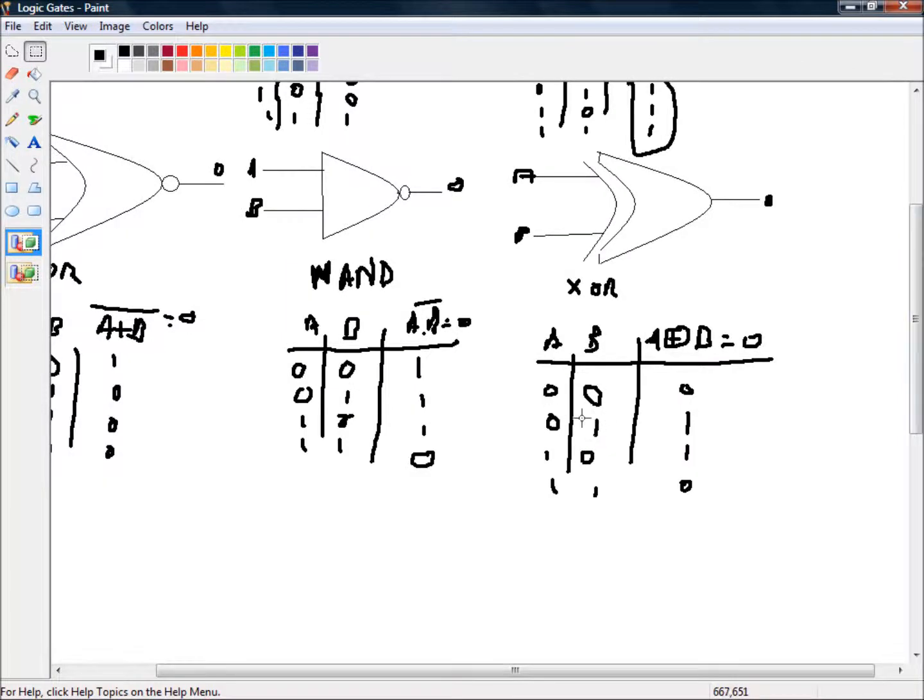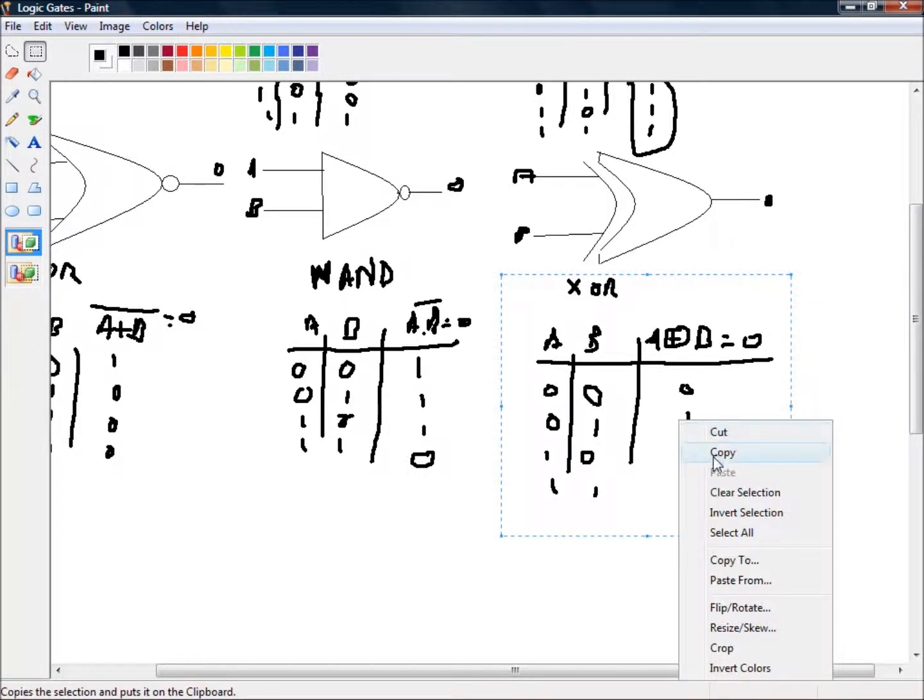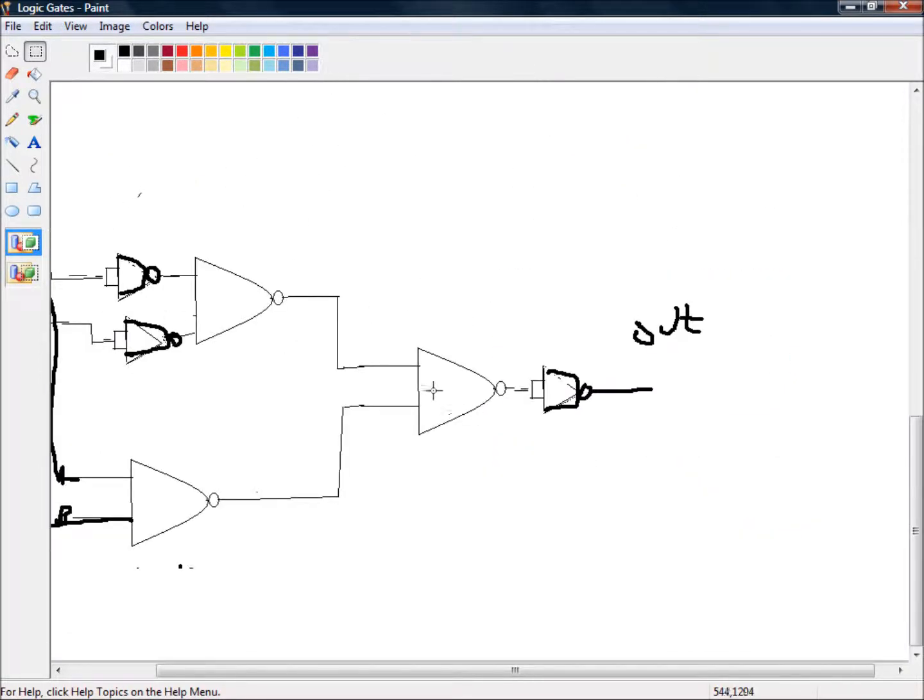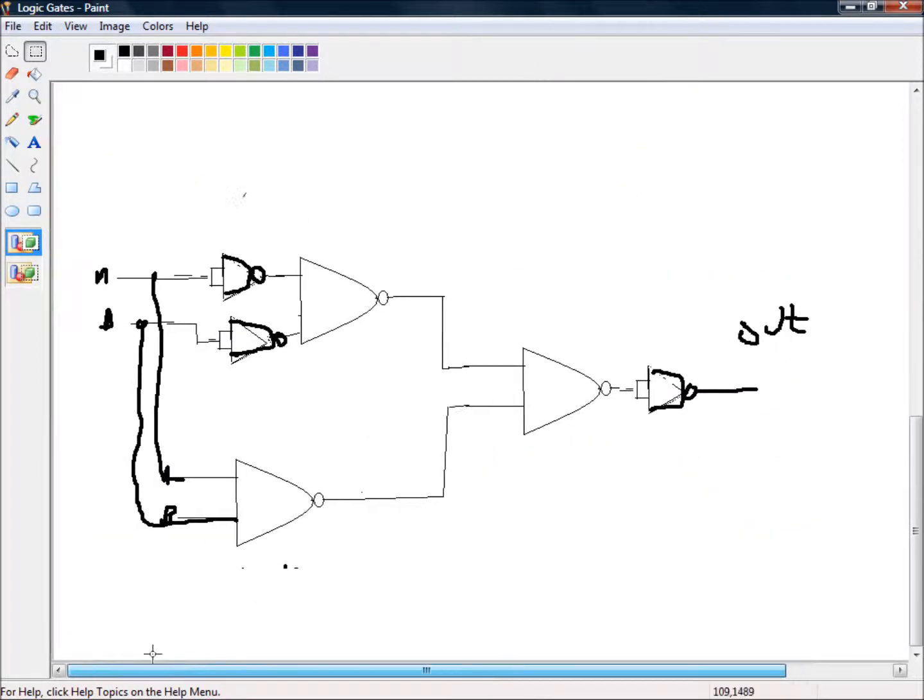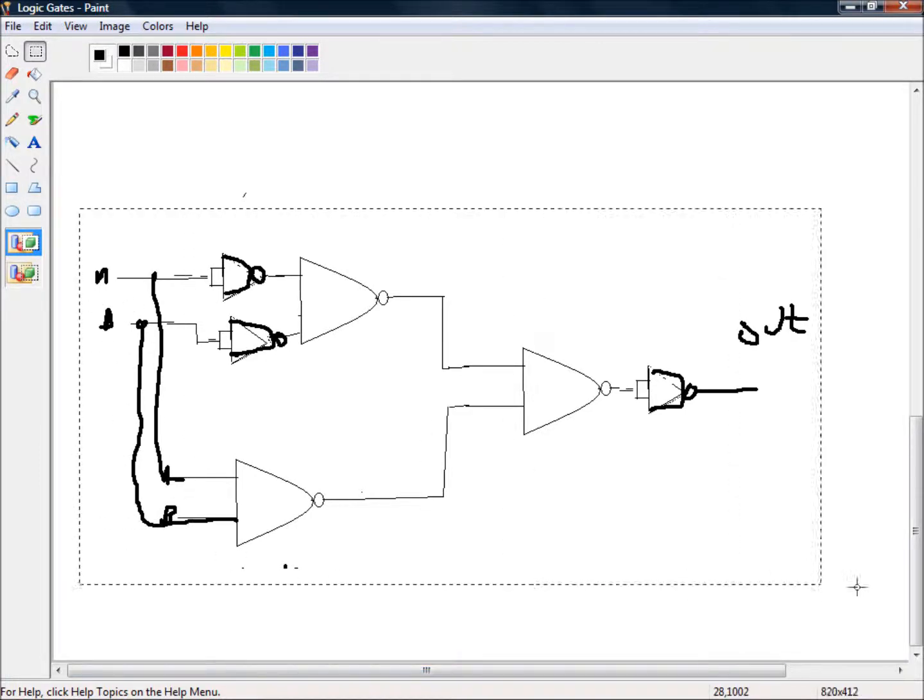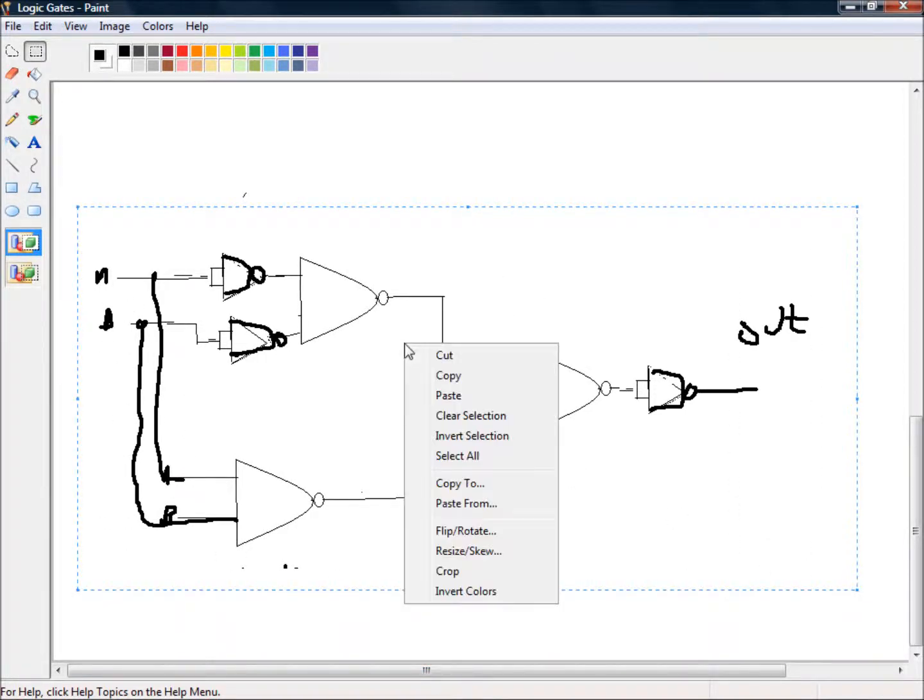because there is something interesting about the truth table. In fact, let's copy this truth table here. Let's get rid of the circuit diagram for an exclusive OR gate.